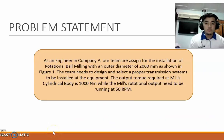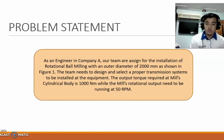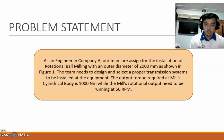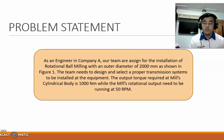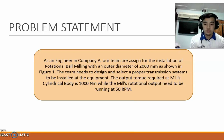Hi and Assalamualaikum. My name is Adli Hakimi bin Shairul, AD190082. For our problem statement: as an engineer in Company A, our team is assigned for the installation of a rotational ball milling with an outer diameter of 2000 mm as shown in Figure 1. The team needs to design and select a proper transmission system. The output torque required at the mill's cylindrical body is 1000 Nm, while the mill's rotational output needs to run at 50 rpm.